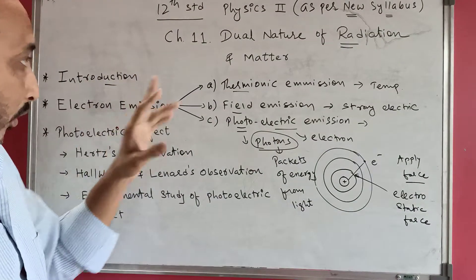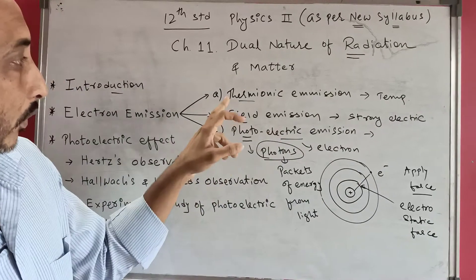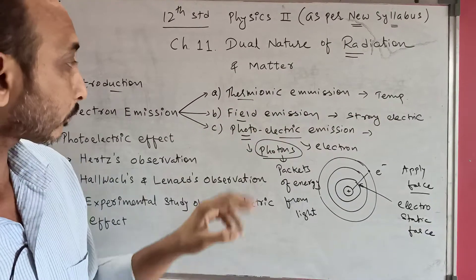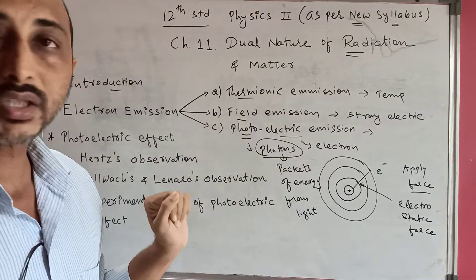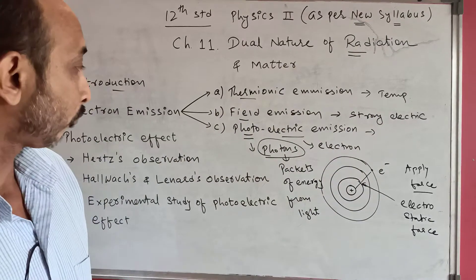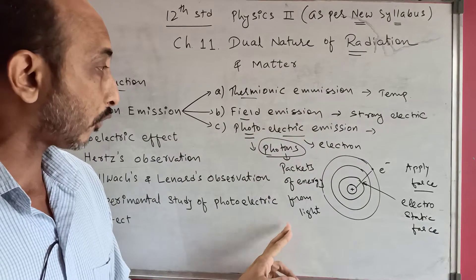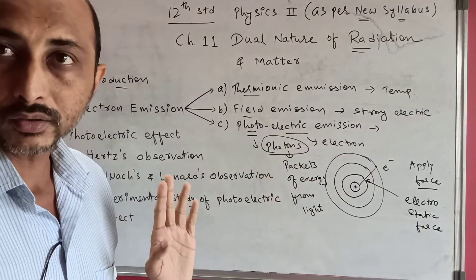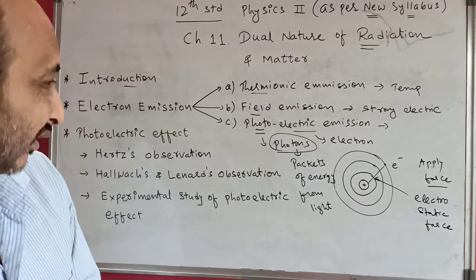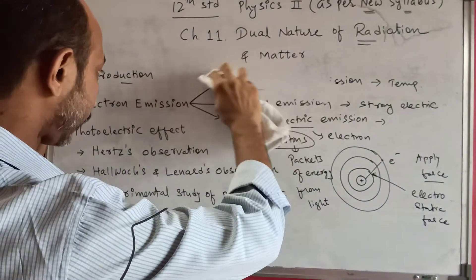To summarize electron emission: there are three types. First is thermionic emission, based on temperature. Second is field emission, based on strong electric field. Third is photoelectric emission, based on photons interacting with electrons.